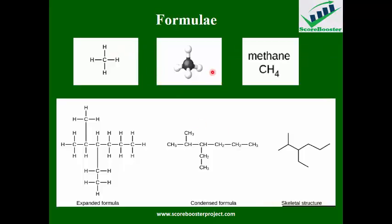Let's look at the formula for a simple member of an alkane. This is a Lewis structure — the black represents carbon and the surrounding atoms are hydrogen. The condensed formula is CH4. You can see one carbon and four hydrogen atoms. The name is methane.